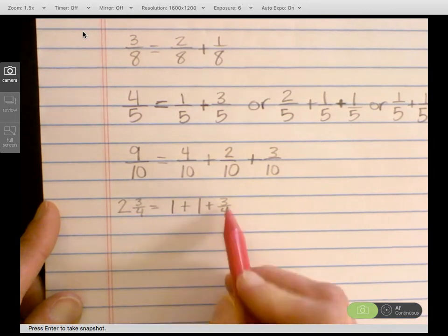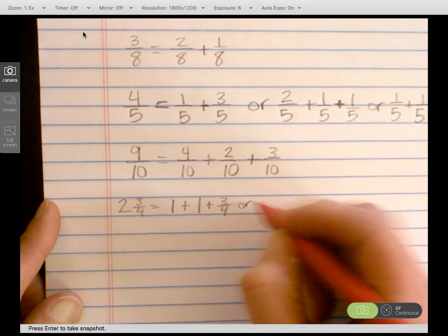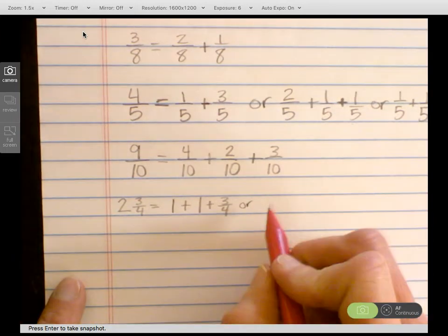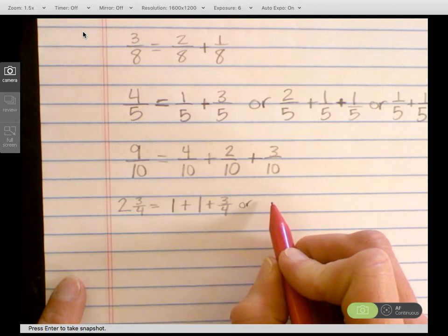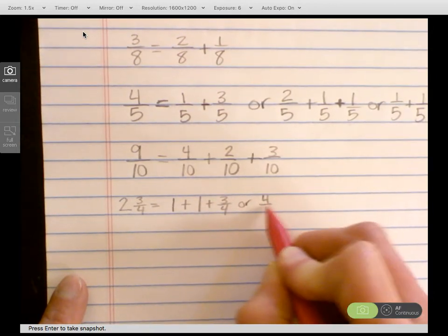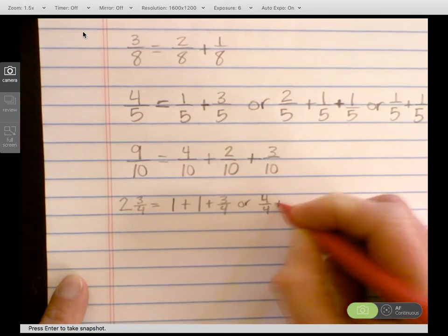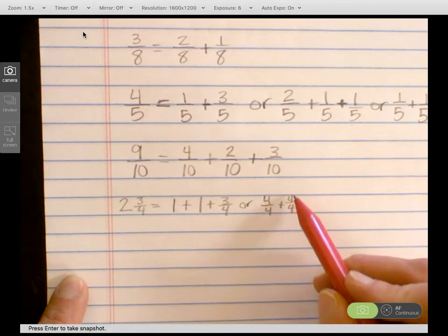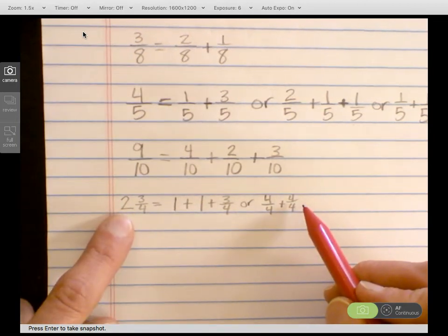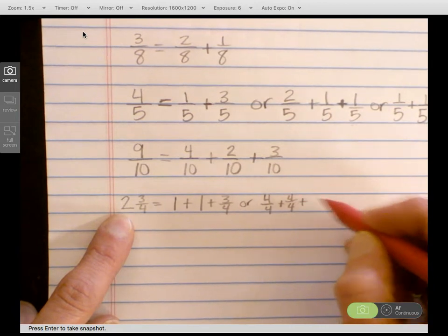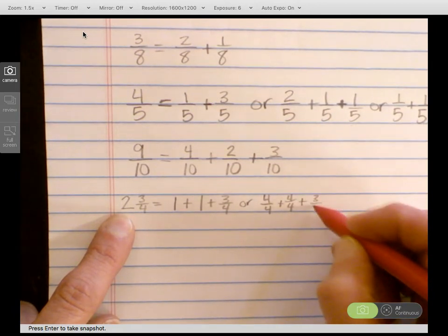2 and then 3 fourths. Or a different way to write that whole number, I could even use fractions to do that. So I could have 4 fourths plus 4 fourths. So this is 1 whole. This is 1 whole to take care of my whole number in my fraction plus 3 fourths.